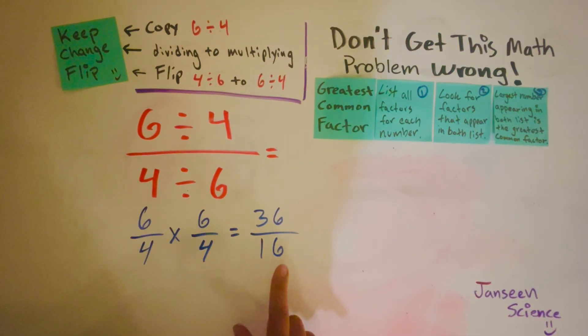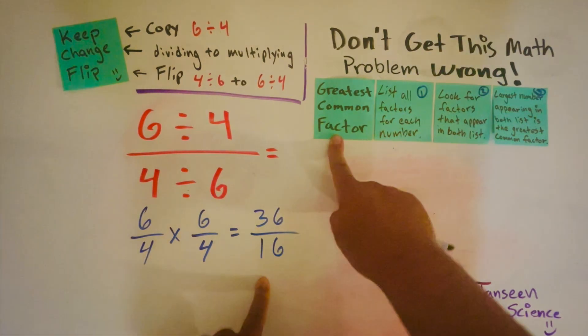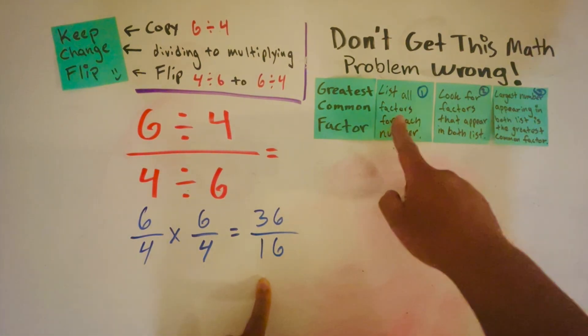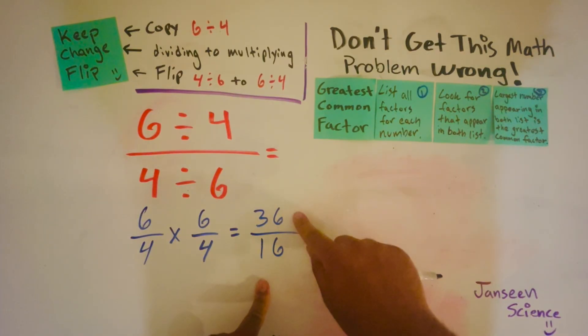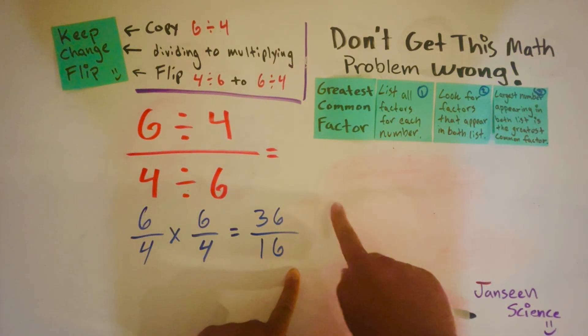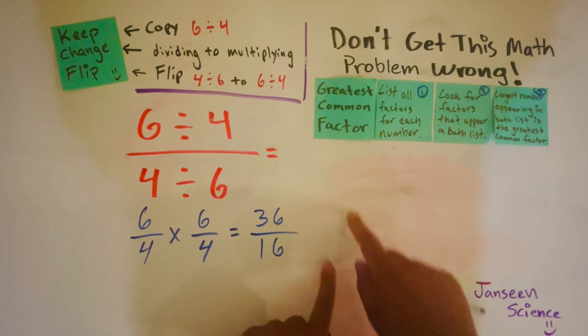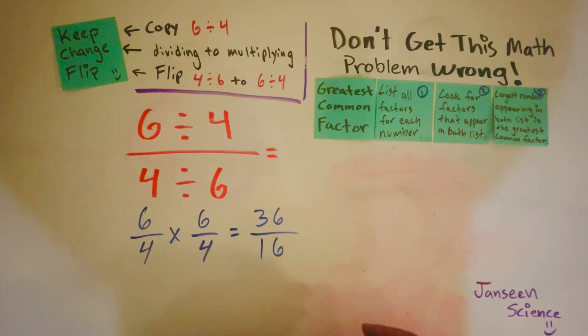Now we need to simplify this using the greatest common factor, and that's by listing all the factors for 36 and 16. So we're going to make two lists, one for each number, and then we want to look for the factors that appear in both lists.